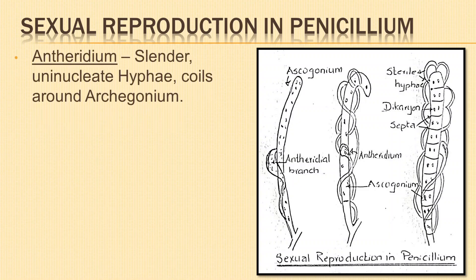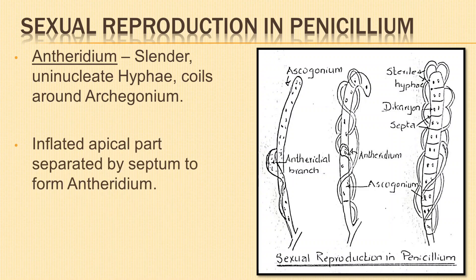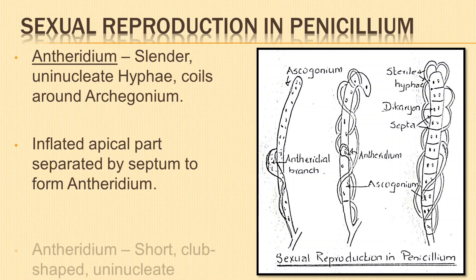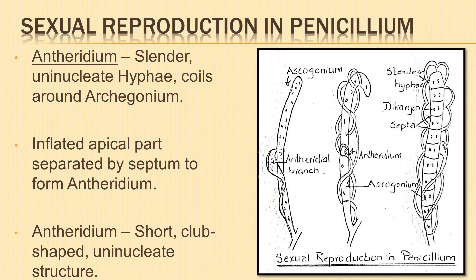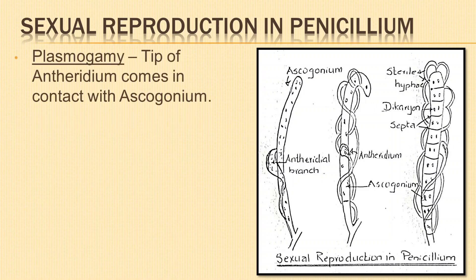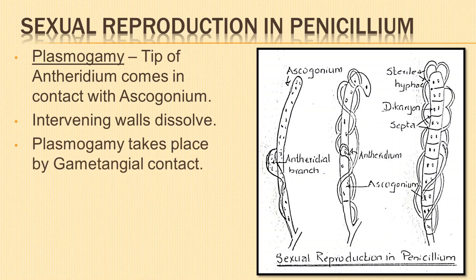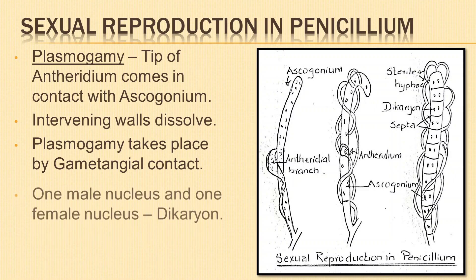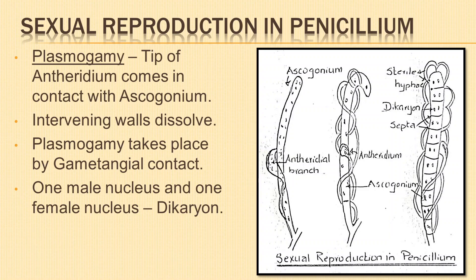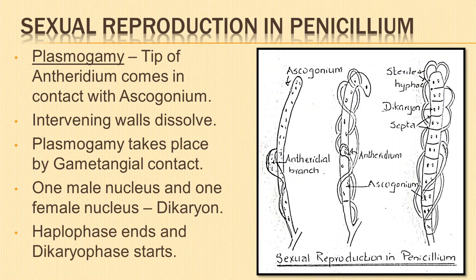The antheridium is a slender, uninucleate, hyphal branch that coils around the ascogonium several times. The apical part becomes inflated and is separated by a septum to form the antheridium, which is a short, club-shaped, uninucleate structure. Plasmogamy: the tip of the mature antheridium comes in contact with the ascogonium. The intervening walls dissolve and the two protoplasts come in contact. Plasmogamy thus takes place by gametangial contact. One male nucleus and one female nucleus form a pair and is called a dikaryon. Here the haplophase ends and the dikaryophase starts.